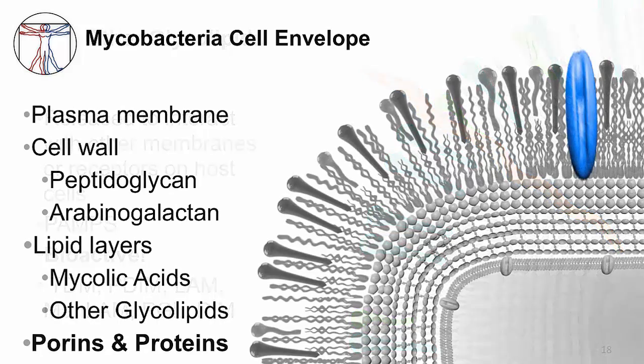Because the lipids have such low permeability, mycobacteria also have porins to move essential molecules into and out of the cell. In addition, there are other proteins in the cell envelope with a variety of functions.